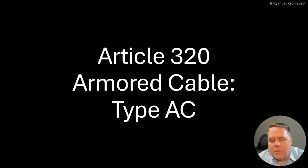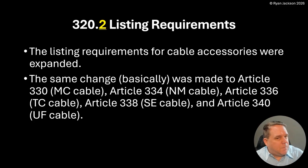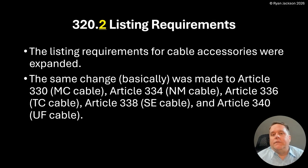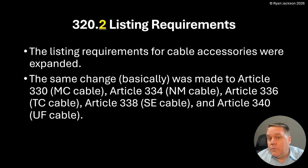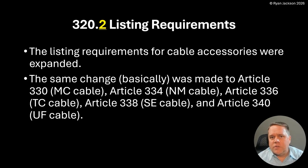Article 320 — Armored Cable, Type AC. Section 320.2, listing requirements: the listing requirements for cable accessories were expanded. Essentially the same change was made to Article 330 for MC cable, 334 for NM, 336 for tray cable, 338 for SE cable, and 340 for UF cable. There are a couple of small differences — for example, tray cable talks about cleats since it's usually in a cable tray — but for the most part the change is the same across all these articles.